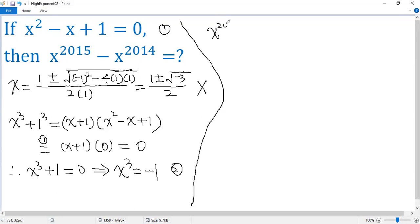x to the power of 2015 minus x to the power of 2014. We take the greatest common factor out. So x to the power of 2014. So the first term has x, the second term has negative 1.